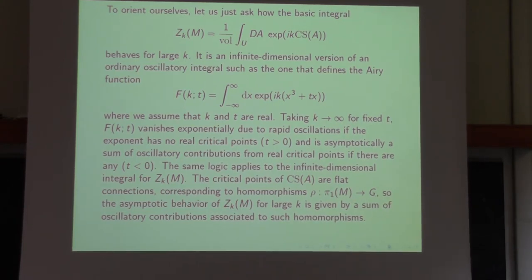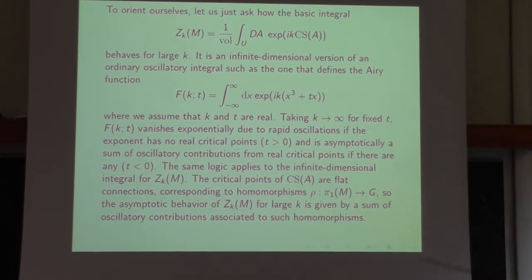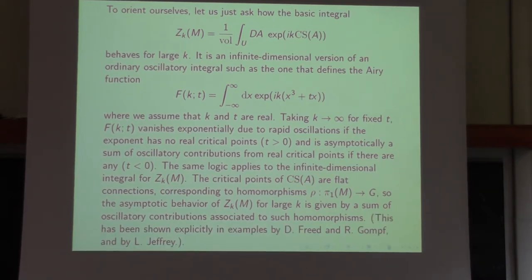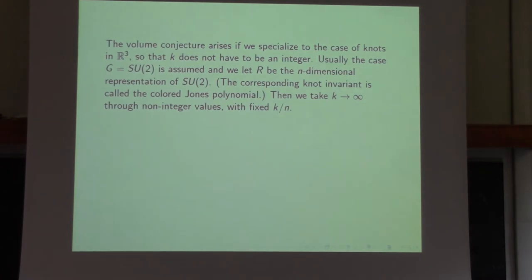Since the Chern-Simons function was defined without a Riemannian metric, the classical equation of motion also has no Riemannian metric. The only equation you can write for a gauge field without a metric is that the curvature or field strength vanishes. So the critical points are flat connections, corresponding to representations of the fundamental group into G. The asymptotic behavior of Z_k(M) for large k is given by a sum of oscillatory contributions associated to such homomorphisms.